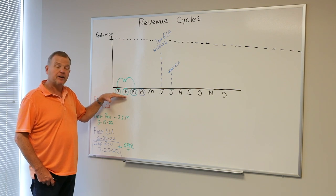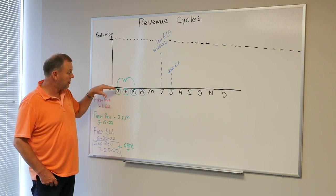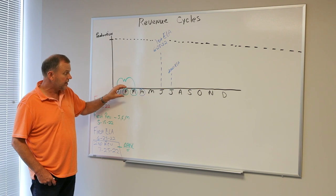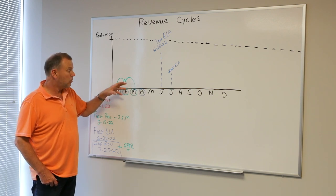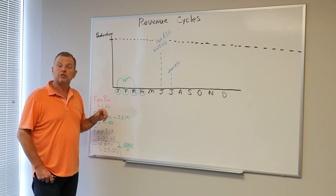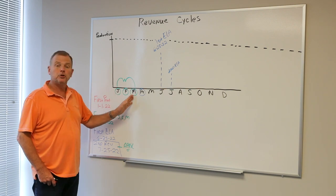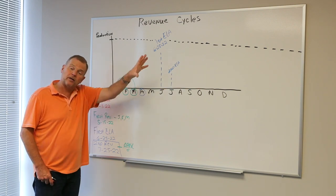The land department then notifies the accounting department, hey, we've been working on title, been working on land. We have everything in place. We've got 95% of the ownership cleared. Let's go ahead and put it into the pay status at the oil company's level.